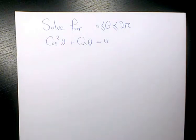The trigonometric equation you will learn in this example is cosine squared theta plus cosine theta equals 0. And we need to solve it for theta between 0 and 2π.